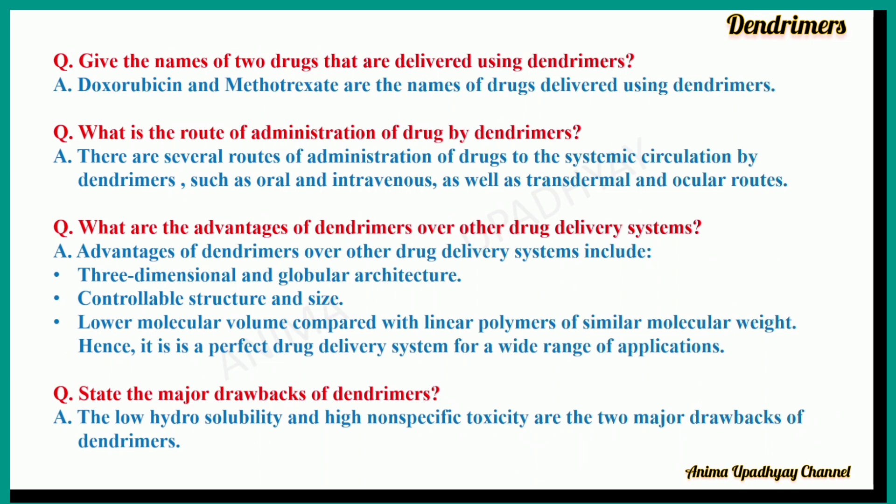Give the names of two drugs that are delivered using dendrimers. Doxorubicin and methotrexate are drugs delivered using dendrimers. What is the route of administration of drugs by dendrimers? There are several routes of administration to the systemic circulation by dendrimers, such as oral, intravenous, transdermal, and ocular routes.